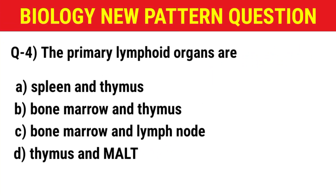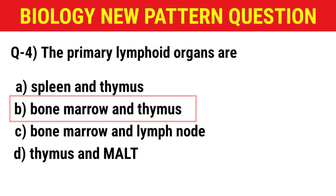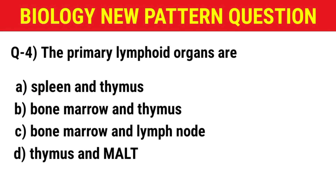Next question: The primary lymphoid organs are — (A) spleen and thymus, (B) bone marrow and thymus, (C) bone marrow and lymph node, (D) thymus and MALT. The correct answer is option B: bone marrow and thymus.